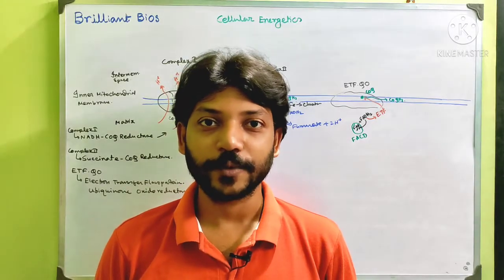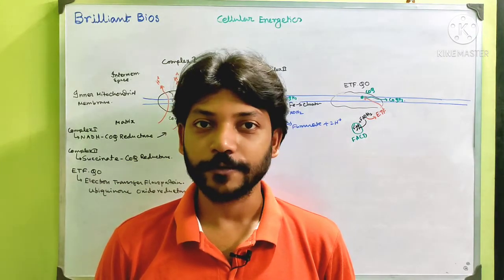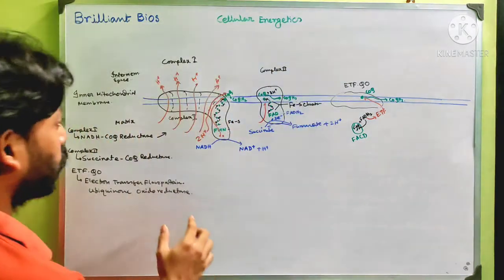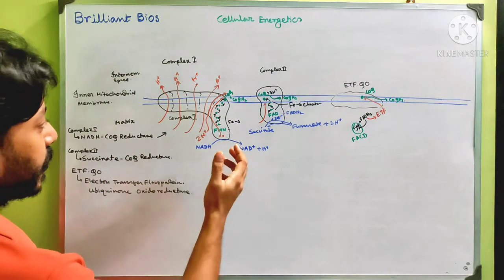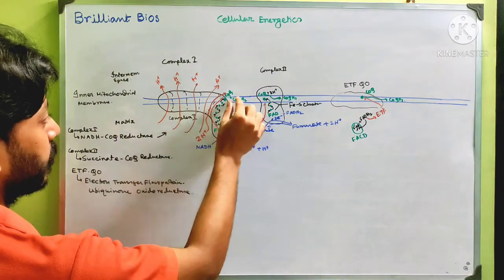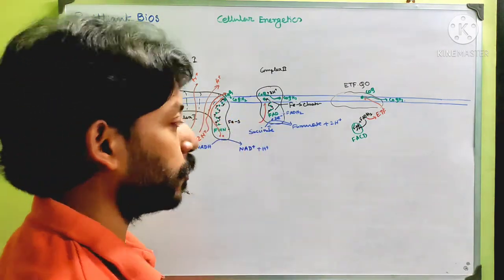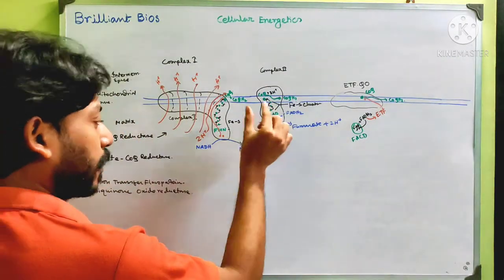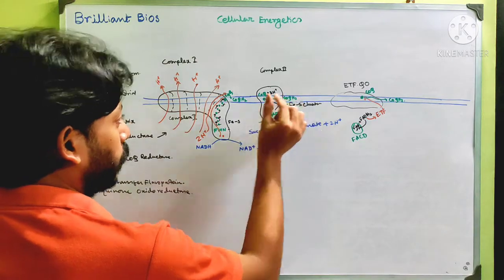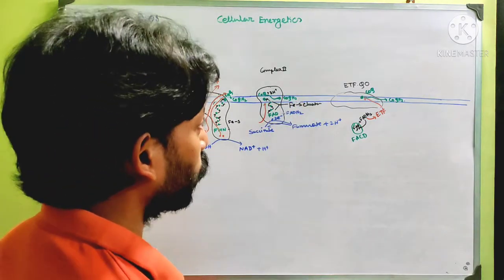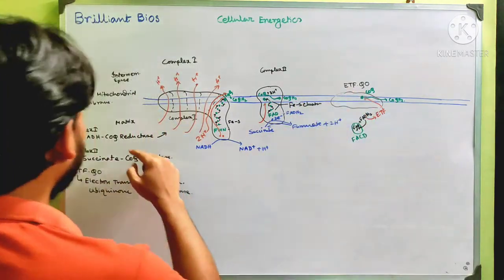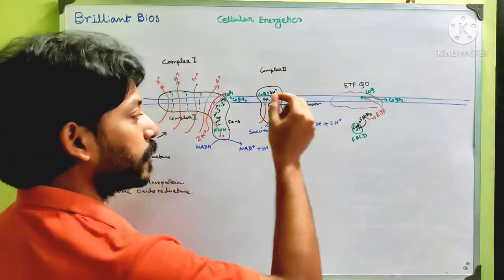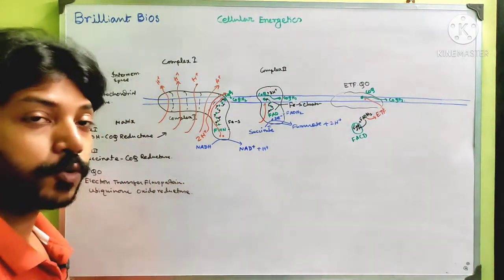In this video we will learn about Complex 3 of the electron transport chain. In my previous videos I discussed Complex 1, whose ultimate product is CoQH2 — ubiquinone dihydroquinone. The end product of Complex 2 is also CoQH2, along with a protein called ETF-Q. I have already mentioned the full name of this protein; it also produces CoQH2.